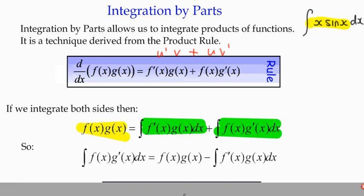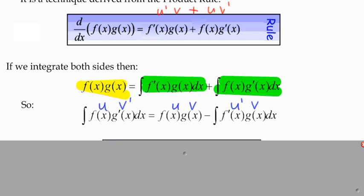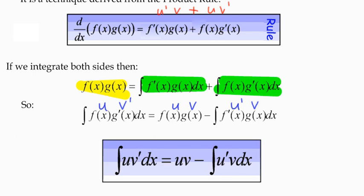So all we've done is rearrange that very slightly. We're not integrating anything because we don't know what any of the functions are. But what we can do is rewrite this in terms of u and v. So for instance, if I were to say the function f is u, and the function g was v, then the left-hand side would be the integral of u, v dash, and the right-hand side would have u times v minus the integral of u dash v dx.